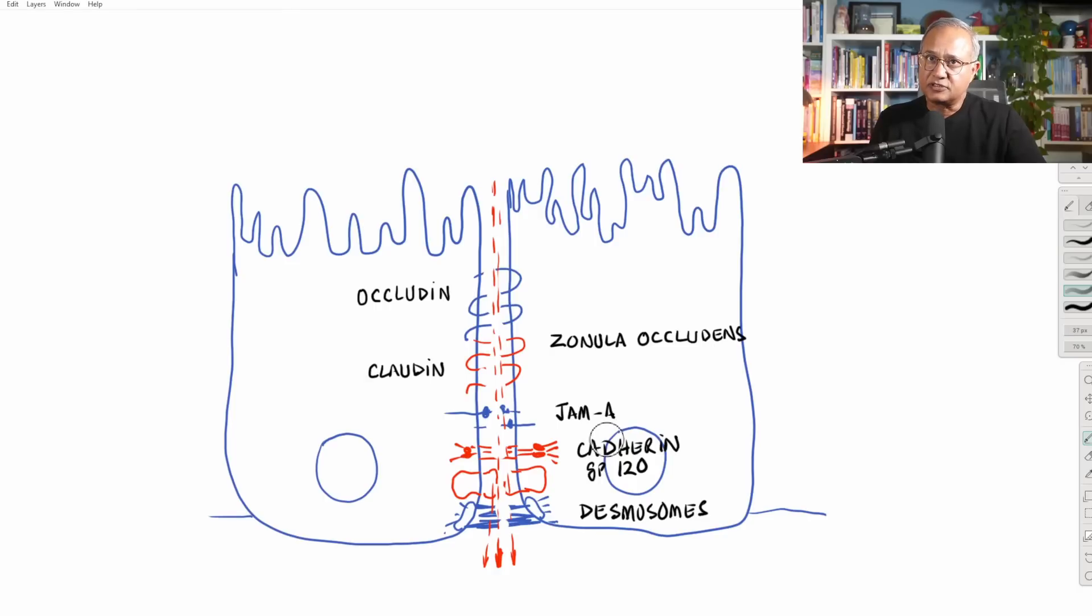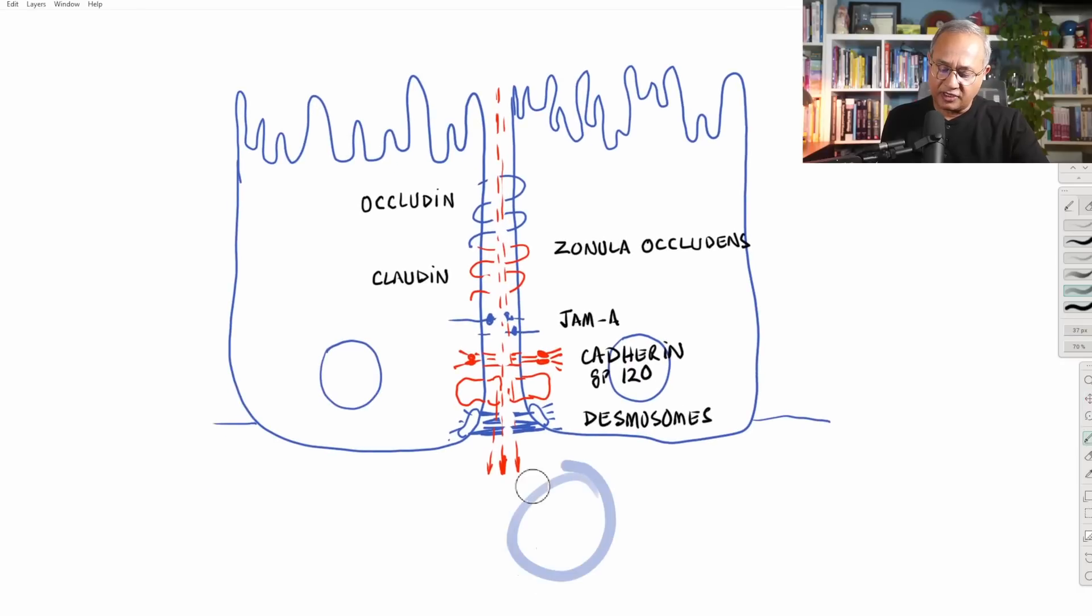So of course, when that happens, that would cause various toxins and other bacteria to start seeping through these gaps and get in the intestinal wall. Once they are there, what will happen is that the immune cells over here, they would react to these toxins and they would cause inflammation. That inflammation would further exacerbate the situation because inflammatory molecules themselves can cause damage to the tight junction proteins making the gut further leaky.